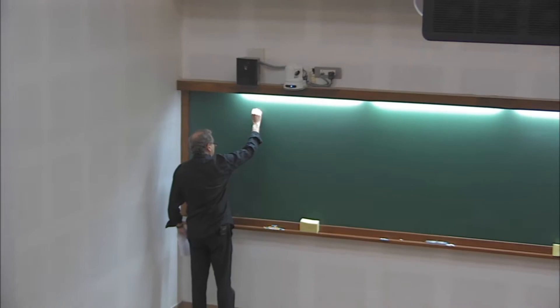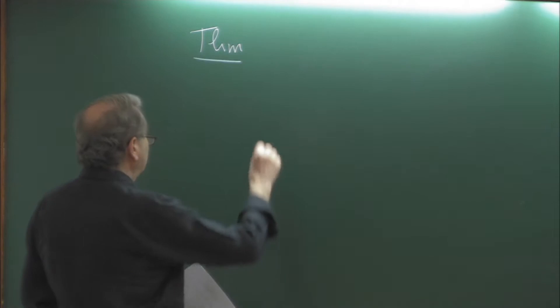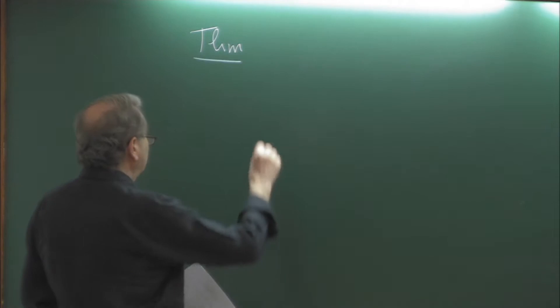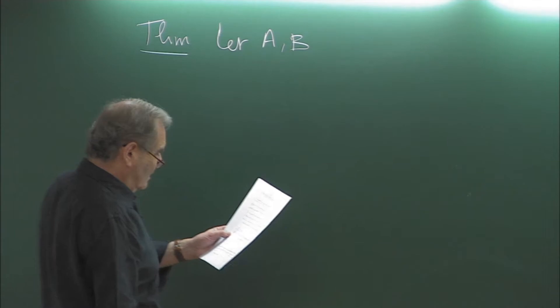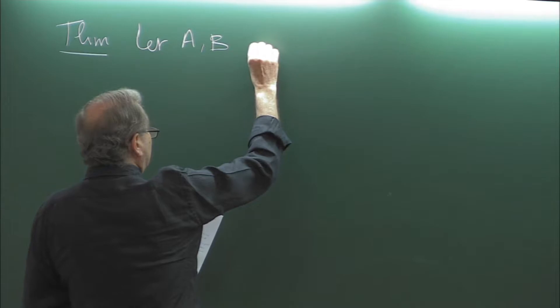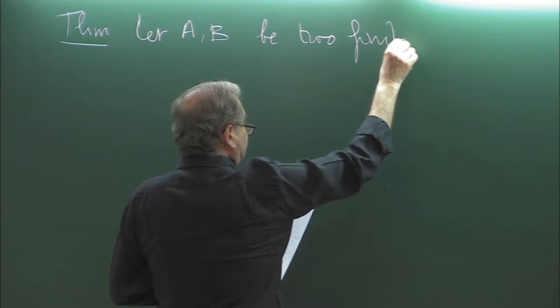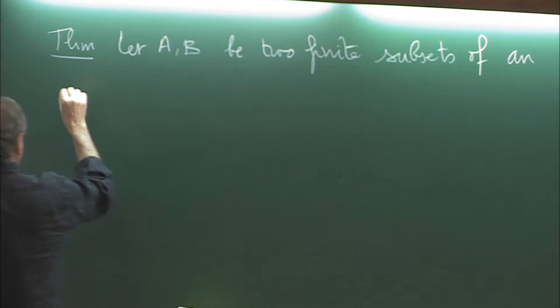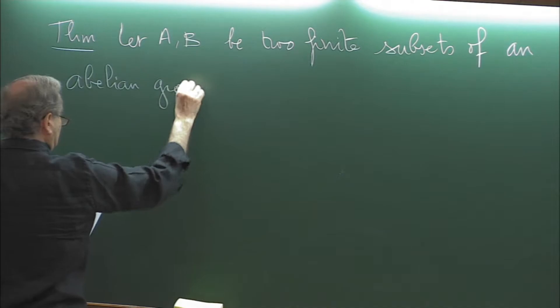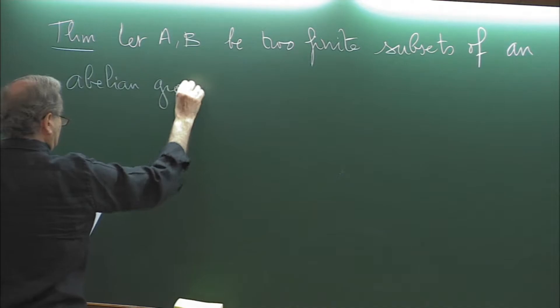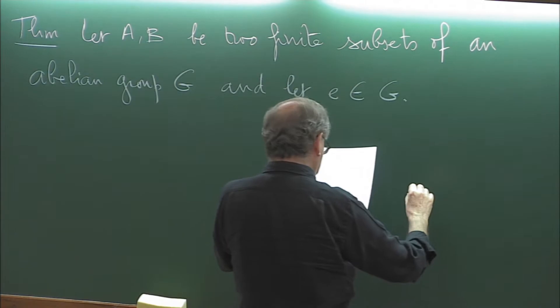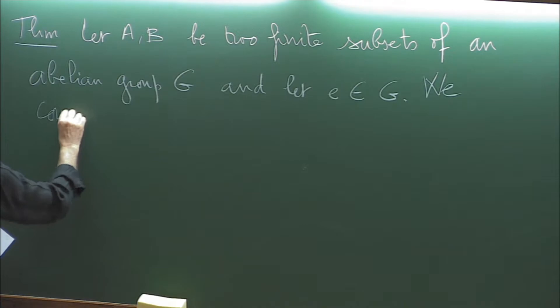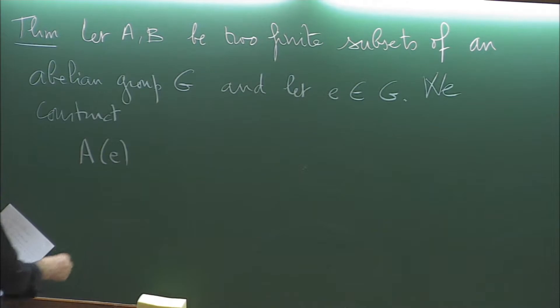Just to tell you what the e-transform is. Let A, B be two finite subsets of an abelian group G, and let e be an element of G. Then we construct the e-transform: the set A(e). The construction is asymmetric — you can exchange the roles of A and B, but it is asymmetric. e(A) is something which is a union, something larger, B plus e — the translate of B by the element e. And B(e) starts with B and you take the intersection with e minus A.